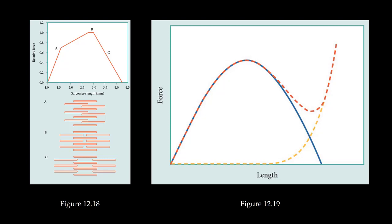Recall that an MTC produces its greatest amount of force at approximately its resting length. If we go too far to one side or the other of this optimal length, force-producing capabilities decrease. Monoarticular MTCs usually operate about this apex, but since biarticular MTCs are affected by rotations about two joints, they can undergo larger length changes than monoarticular MTCs.